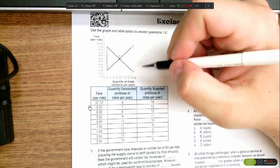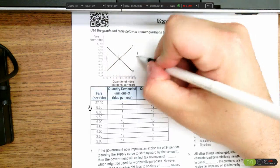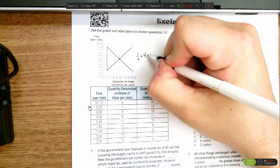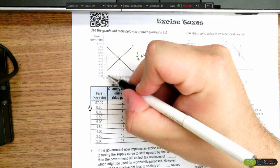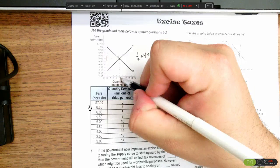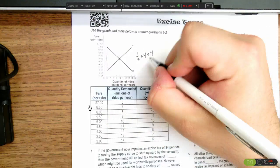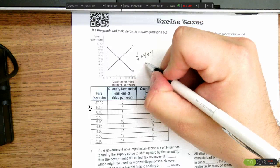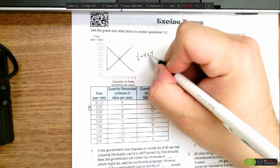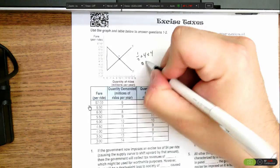Then we figure out the deadweight loss, which is the area of this triangle right here. That would be one-half times the $4 tax times the number of rides that are lost. At equilibrium, we would normally have 10 million rides. Now we only have 6 million, so there are 4 million rides that are lost. That equals $8 million worth of deadweight loss.